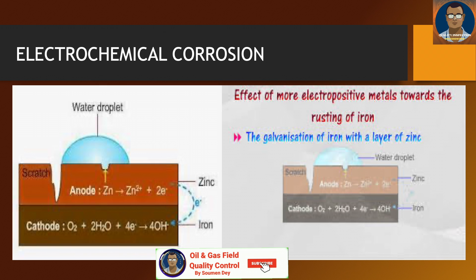Electrochemical corrosion is a process in which current flows between the cathodic and anodic areas on metallic surfaces, resulting in corrosion. There are always multiple corrosion elements in this process. A host metal or metals is exposed in an electrolyte — an electrolyte is a medium that can conduct electricity by movement of ions.